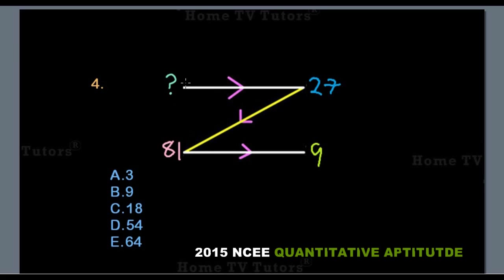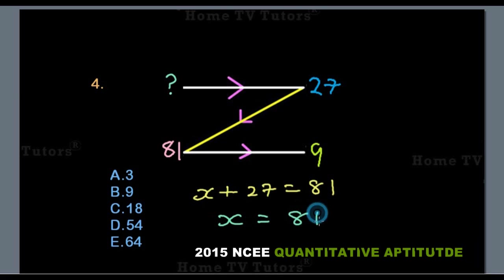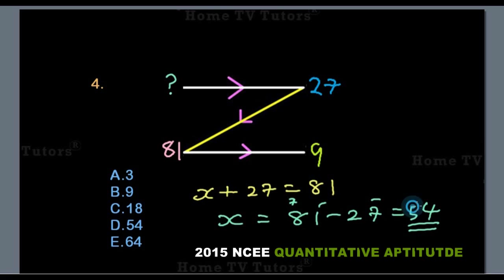Now we have to find the missing number at the top left. The summation of the two numbers at the top slides down to give us the number at the bottom left. Let the unknown number be X; then X plus 27 equals 81. Subtracting 27 from both sides: 1 minus 7 is not possible, so we borrow 1 from 8, giving 11 minus 7 equals 4, and 7 minus 2 equals 5. The missing number is 54, so answer option D is the right answer.